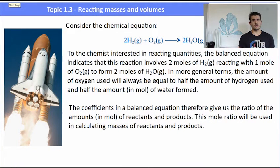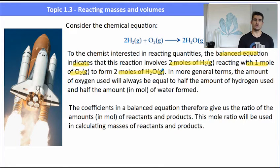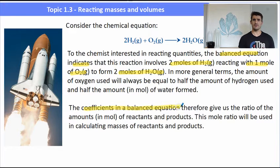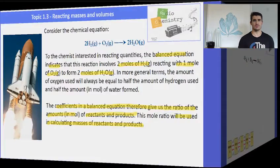Let's consider the following chemical equation: 2H2 gas plus O2 gas goes to 2H2O. For chemists, this means that two moles of hydrogen gas reacts with one mole of oxygen gas to form two moles of water. In general terms, we always need half the amount of oxygen as we do of hydrogen. The coefficients in a balanced chemical equation give us the ratio of the amounts in moles of the reactants and products. We use this mole ratio to calculate the amounts or masses of reactants and products — the mole ratio is extremely important.